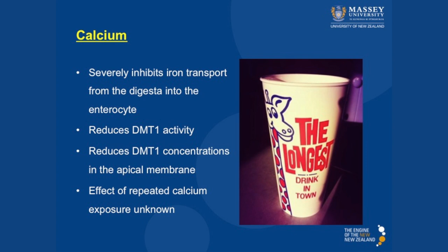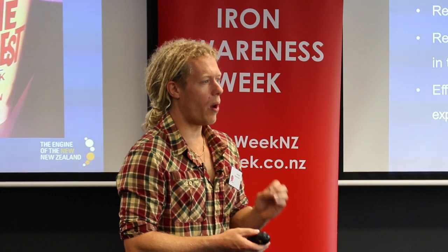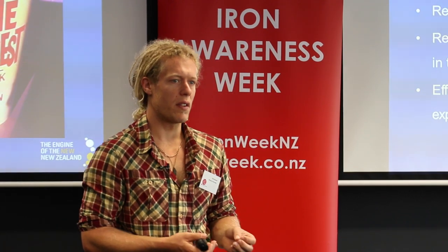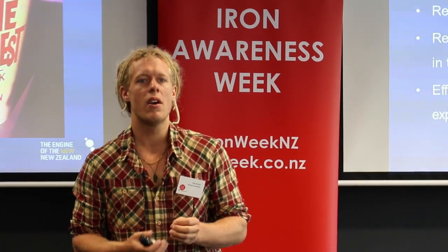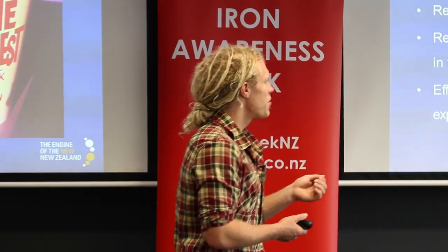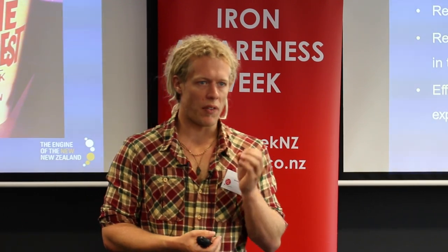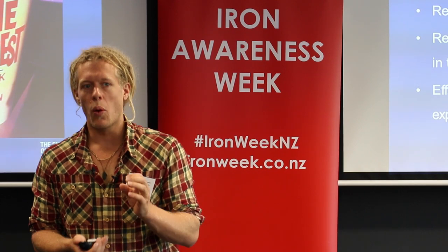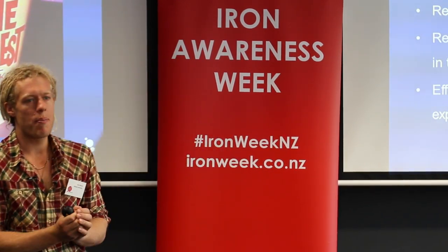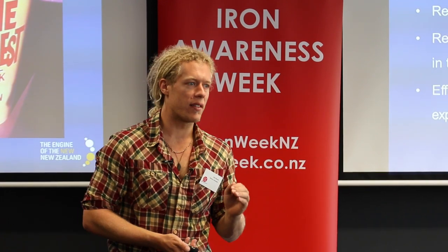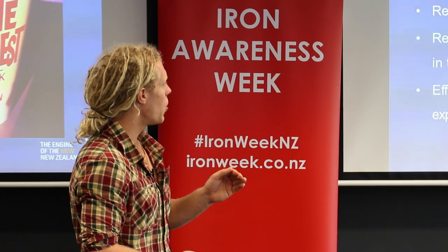Calcium is slightly different. Calcium also inhibits iron absorption, but this is a topical subject. When you give a human subject, an animal, or a cell culture calcium and iron together as a single dose, the amount of iron absorbed is very low. But if you look at populations that consume lots of calcium, they are often not iron deficient. We're not actually sure what the long-term impact of consuming calcium is, but in the short term it seems to decrease the amount of iron that the transporter DMT1 can transport, and it also seems to pull DMT1 away from the apical membrane — actually reducing the concentration of iron transporters present in the apical membrane. But again, we're not quite sure what the effect of repeated calcium exposure is long term.